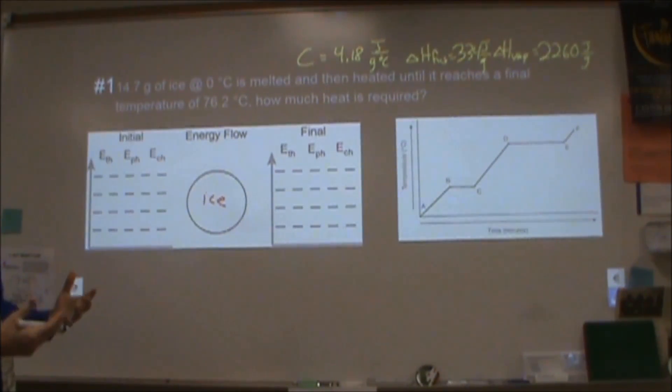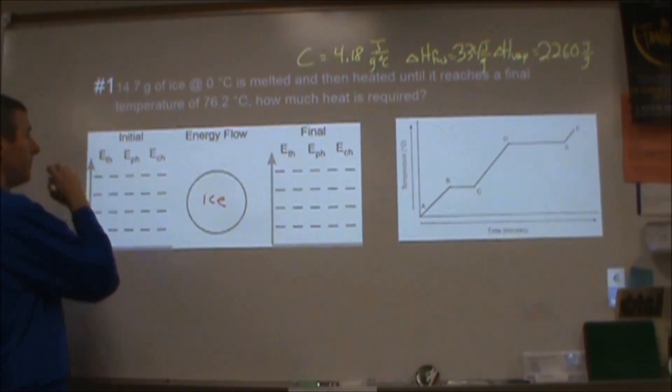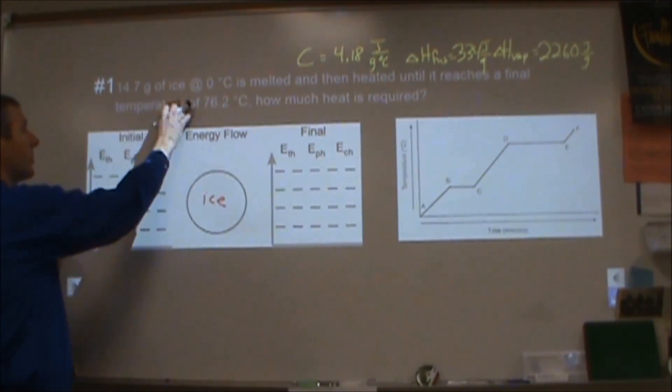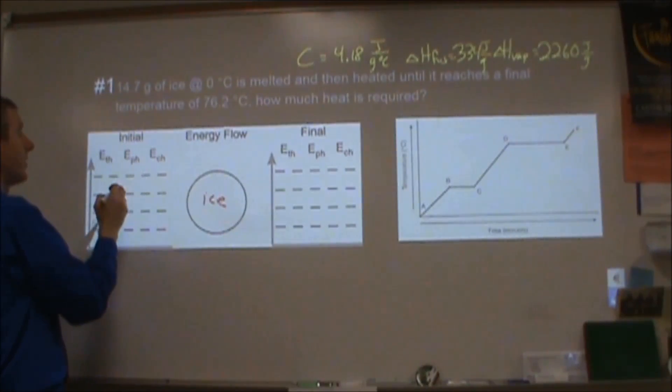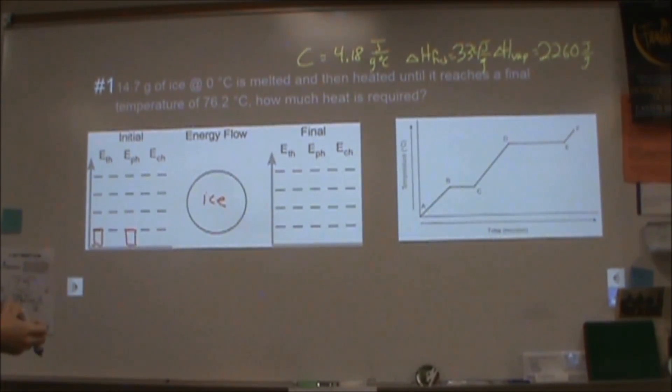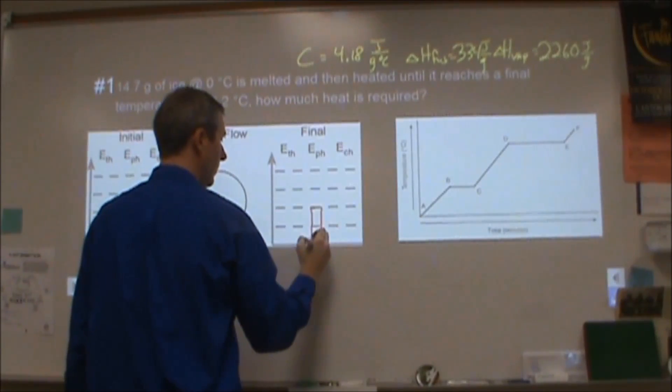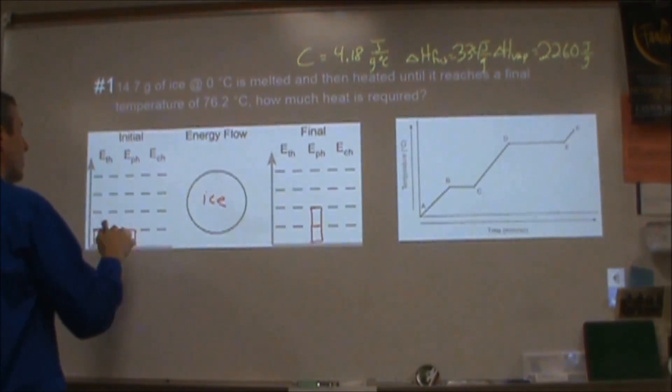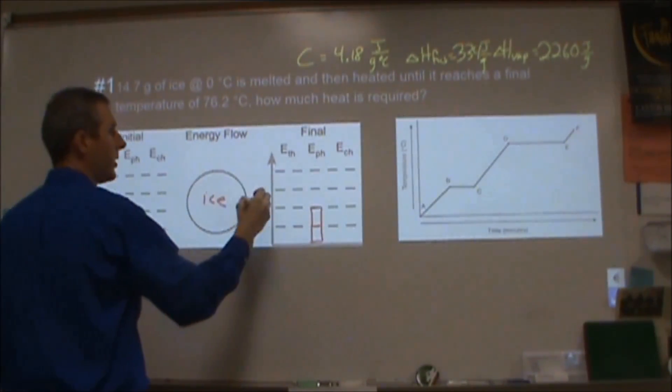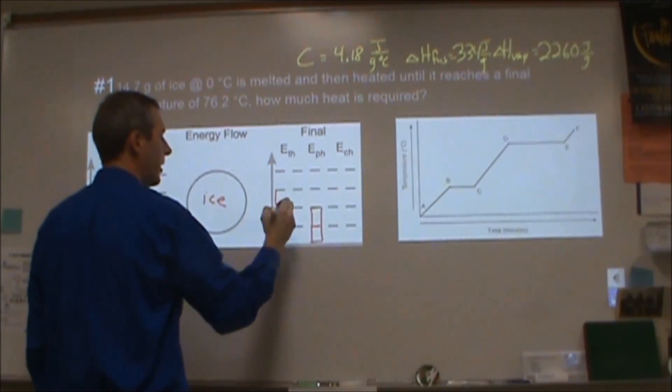In this case, we're not changing what chemical we have, so we can ignore chemical. We're starting with ice at zero degrees, so we're going to start with a single bar of thermal energy, not very much. For phase, we're going to start with a single bar of phase energy. Then we're changing the phase to liquid, so we're going to increase that. The temperature is going from zero degrees to 76.2, so we're going to end up with about three bars of thermal energy.